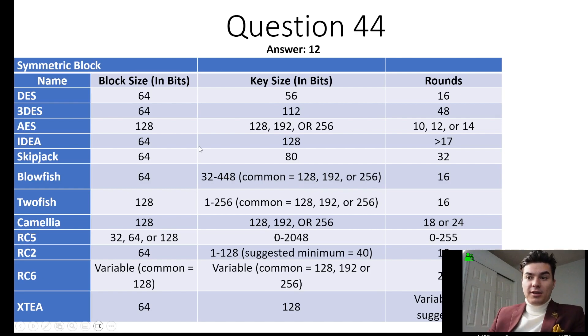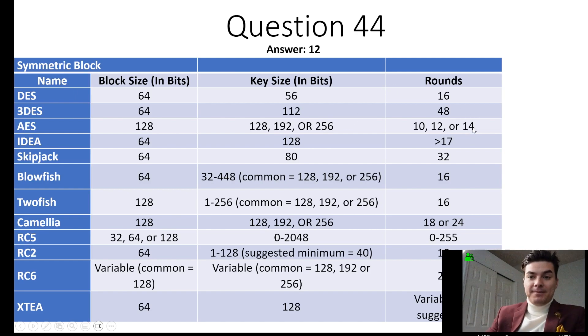Take a look here — these are parallel with each other: 128-bit key uses 10 rounds, 192-bit key uses 12 rounds, and 256-bit key uses 14 rounds. You should definitely know that.